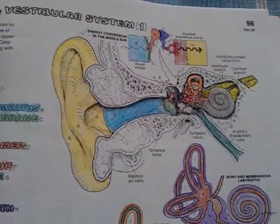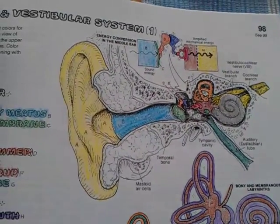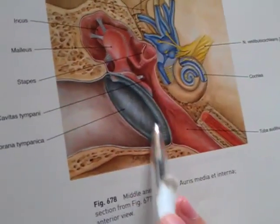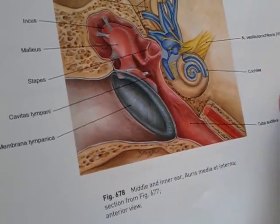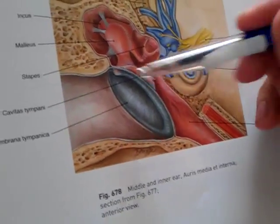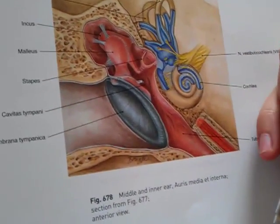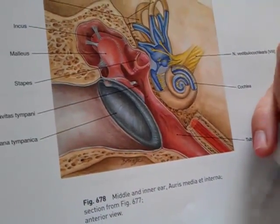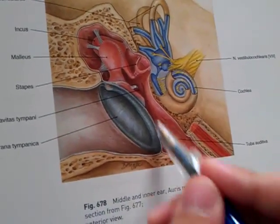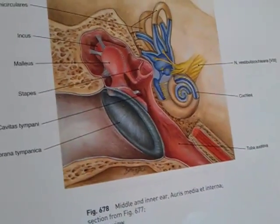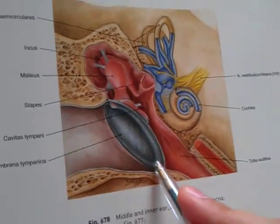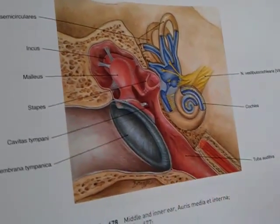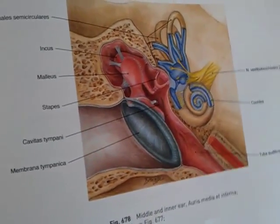The tympanic membrane separates the tympanic cavity from the external acoustic meatus. It is placed obliquely, so as to form an acute angle. It is nearly oval in form, its circumference is thickened and forms a fibrocartilaginous ring, which is fixed in the tympanic sulcus.